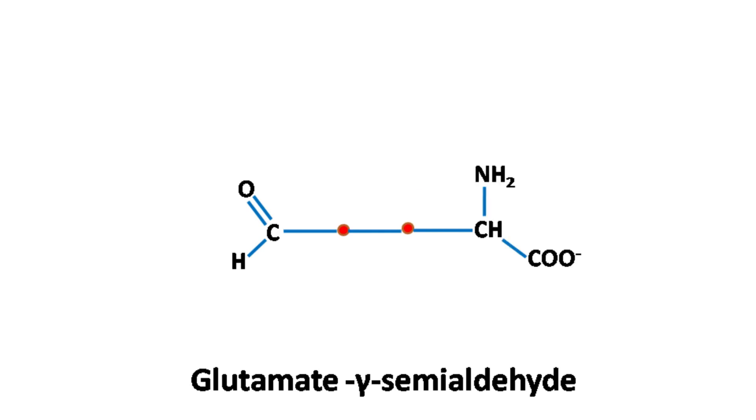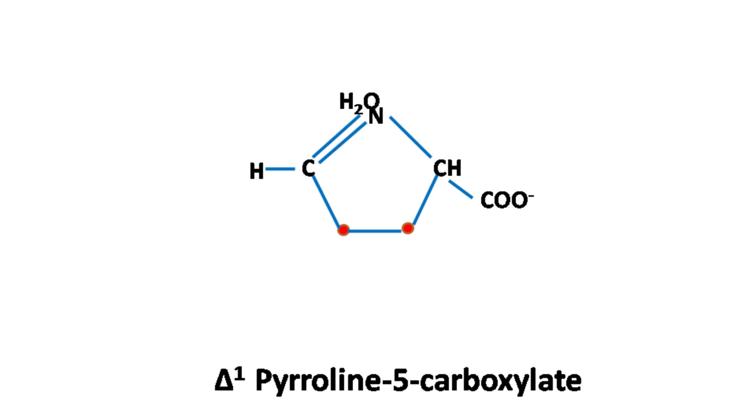Glutamate gamma semialdehyde then forms a ring called pyroline 5 carboxylate.